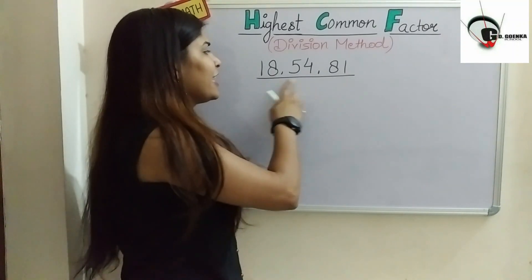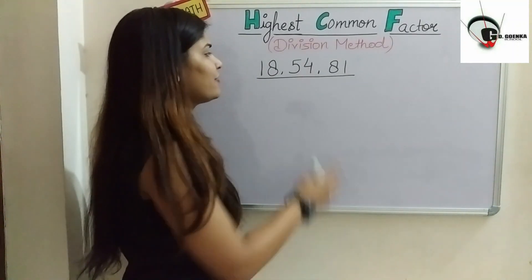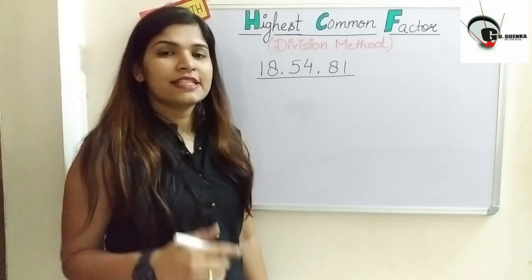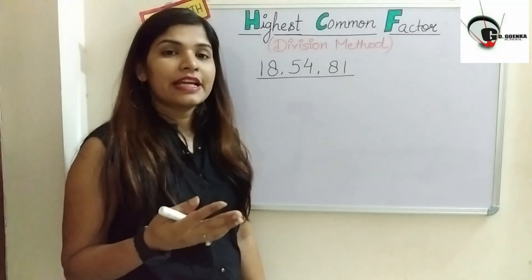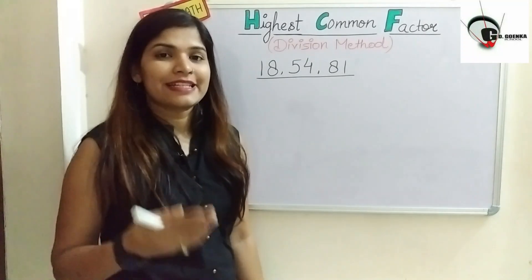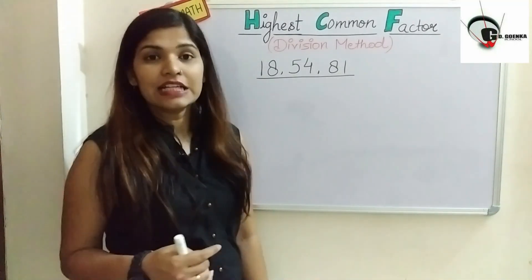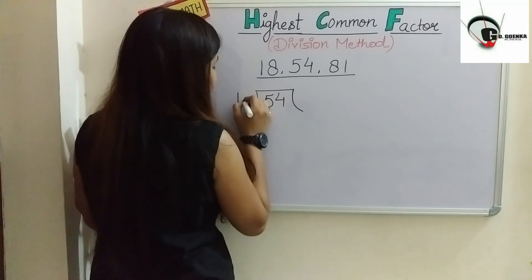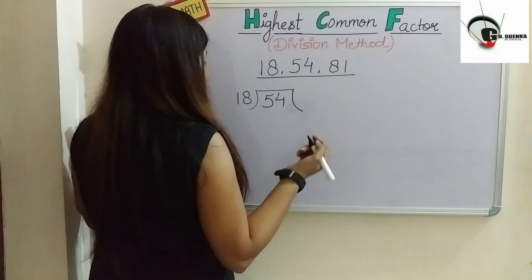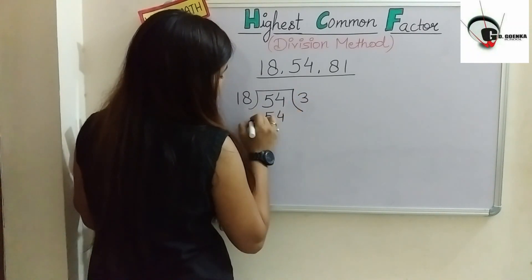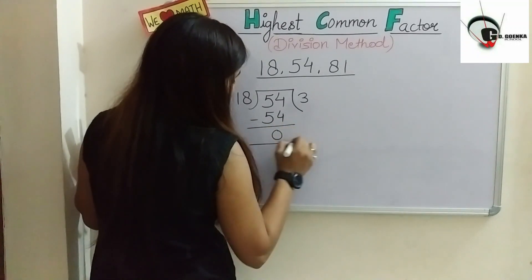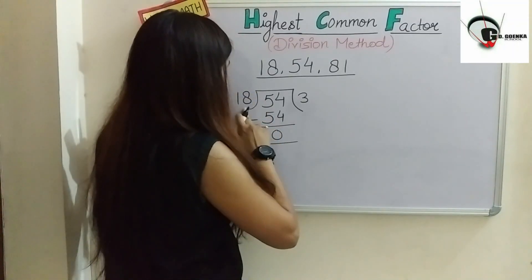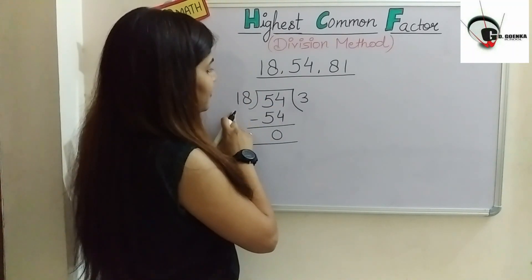The first step is to take only two numbers. We can take 18 and 54, or 54 and 81, or 18 and 81 — it's our choice. I'm taking the first two numbers: 18 and 54. The greater number is 54, so 54 is the dividend and 18 is the divisor. In the table of 18: 18 ones are 18, 18 twos are 36, 18 threes are 54. So we get a remainder of 0.